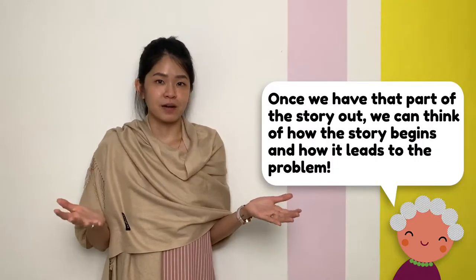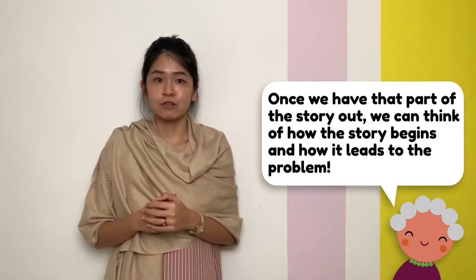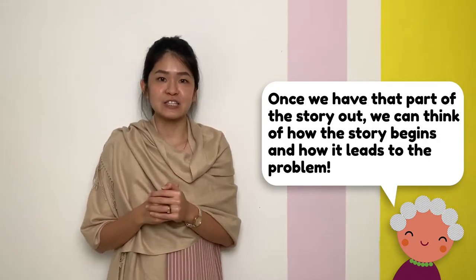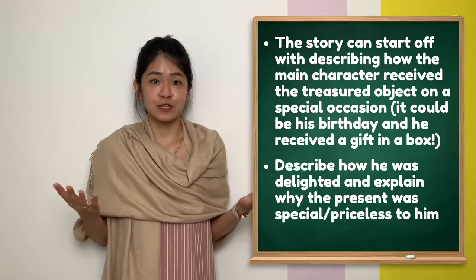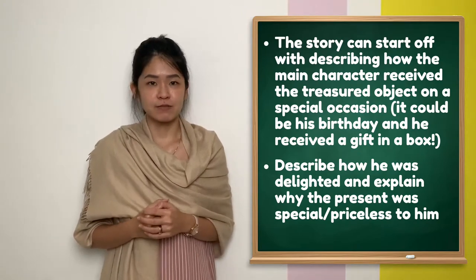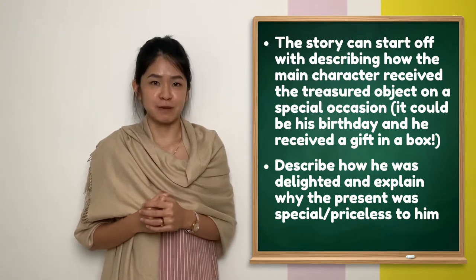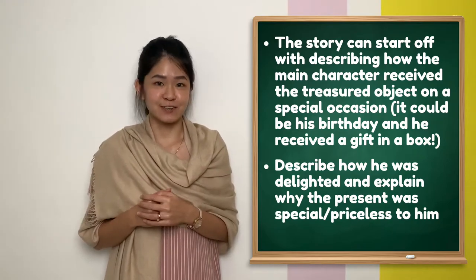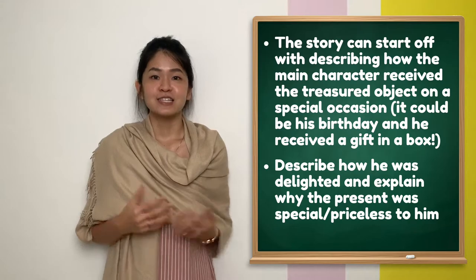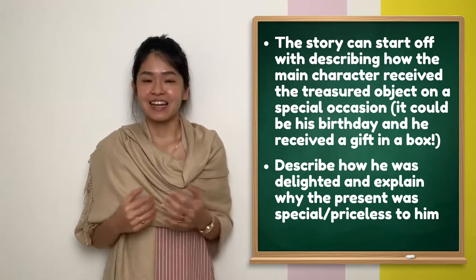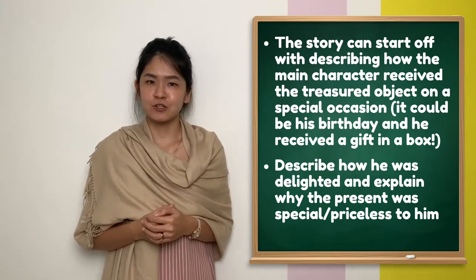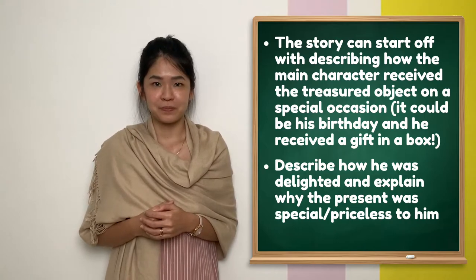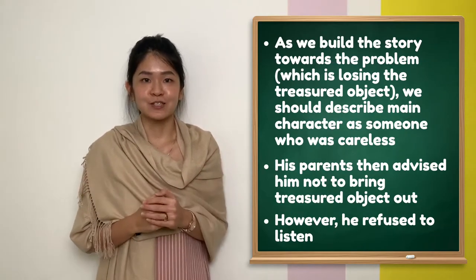Once we have that part of the story out, we can think of how the story begins and how it leads to the problem. The story can start off with describing how the main character received the treasured object on a special occasion. It could be his birthday and he received a gift in a box. Describe how he was delighted and explain why the present was special and priceless to him.